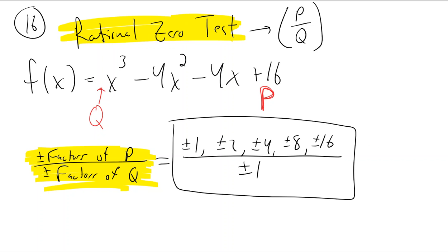So for example, notice 5 is not in this list. So that tells me there's zero chance 5 is an x-intercept. There's no chance 5 could be a zero.